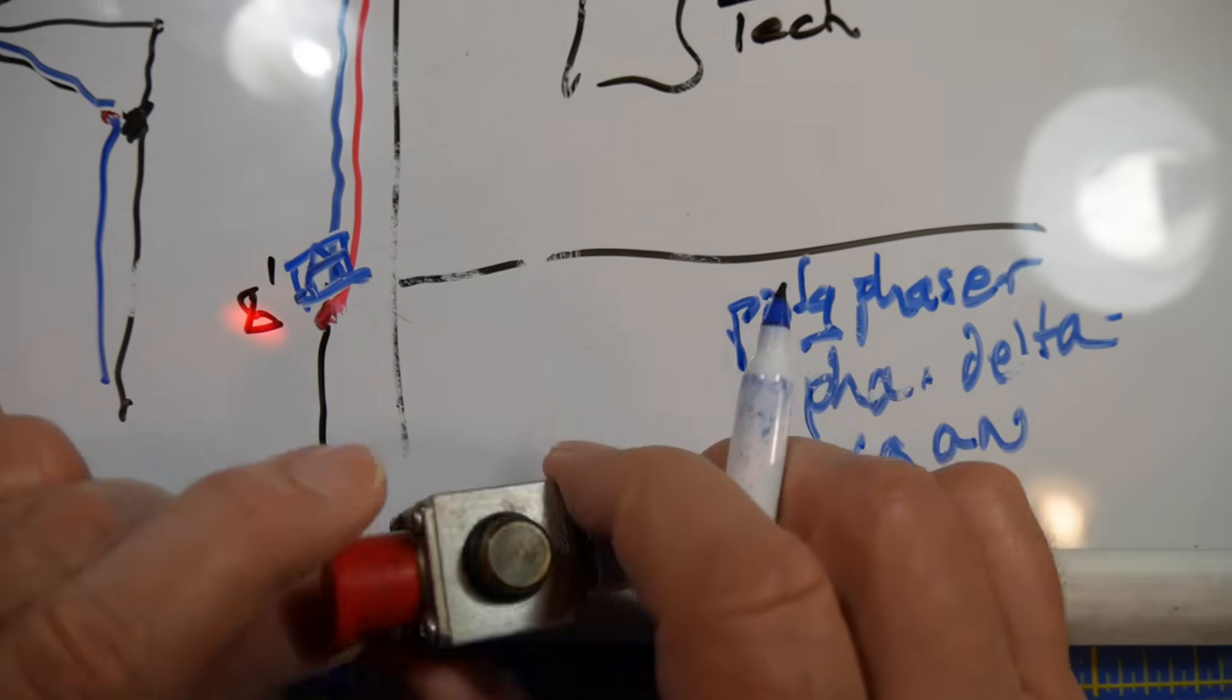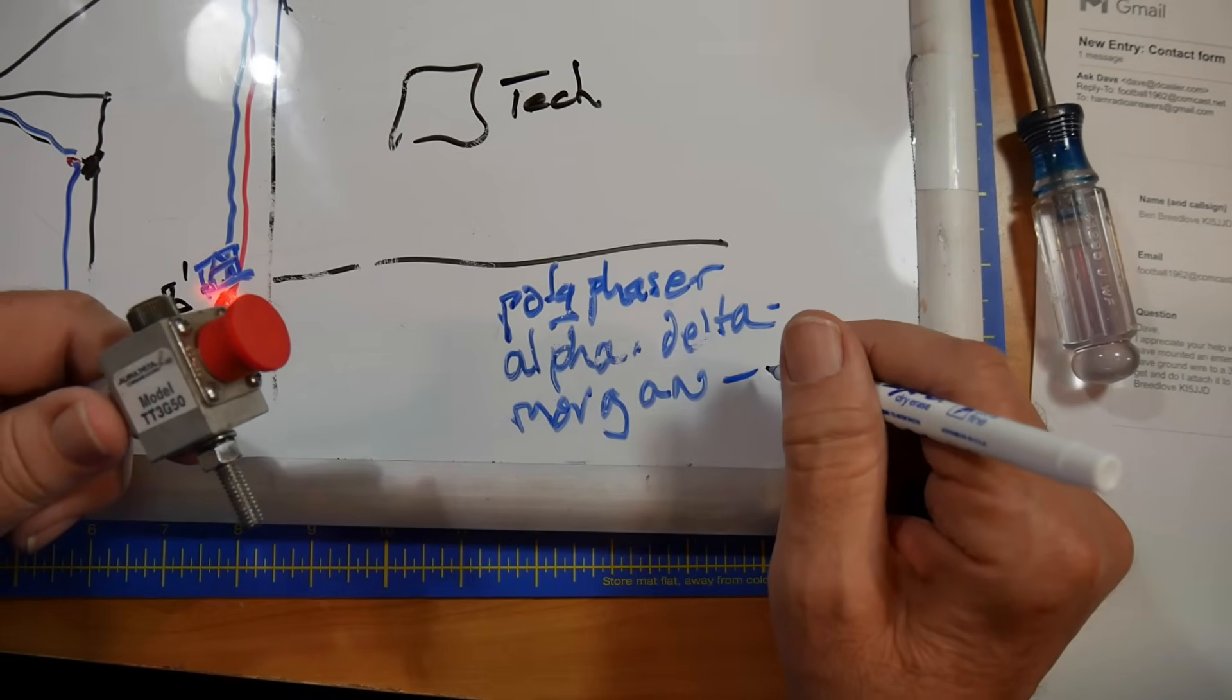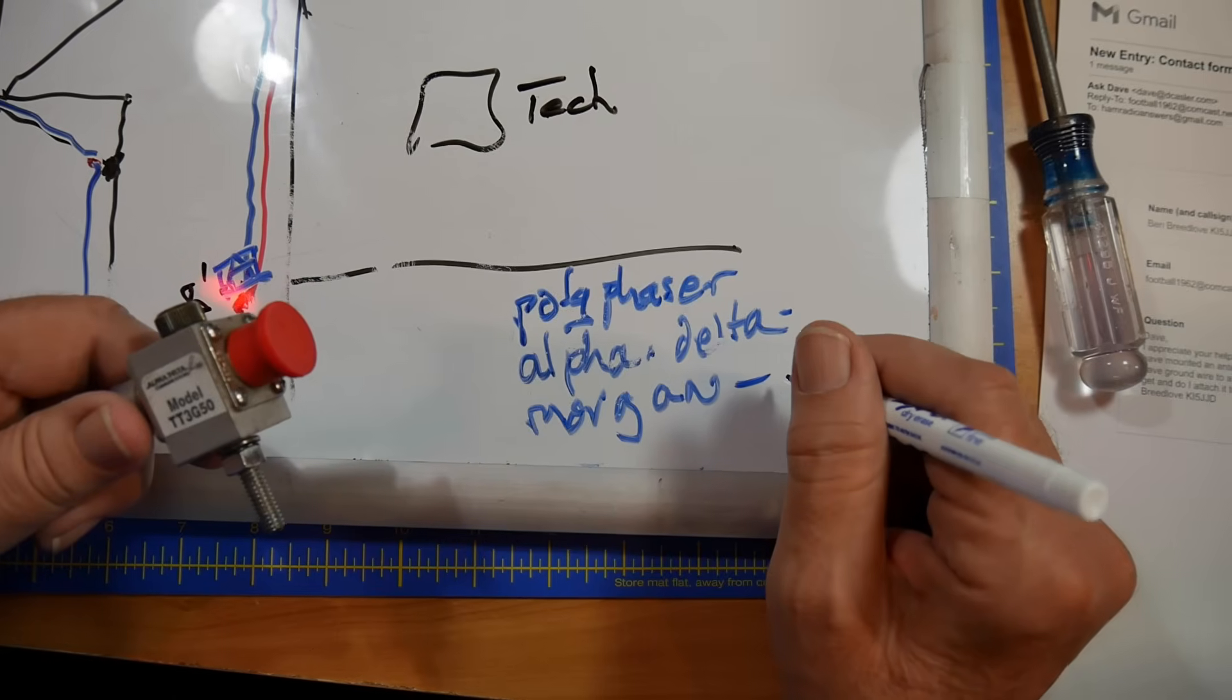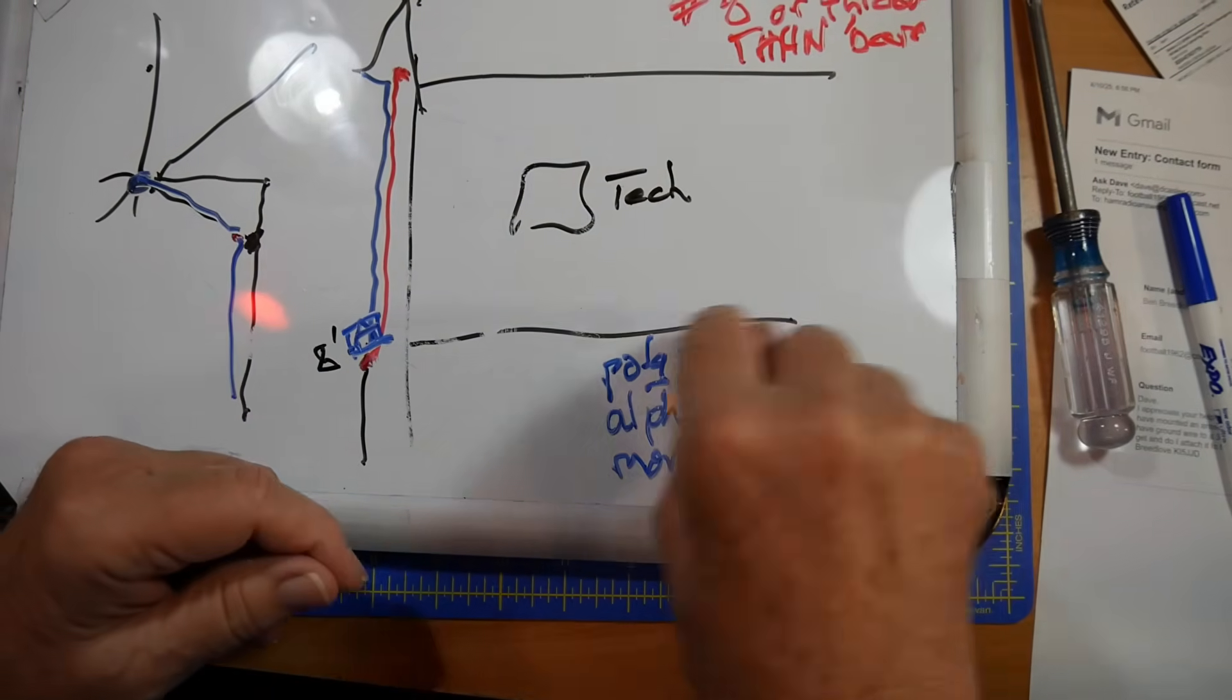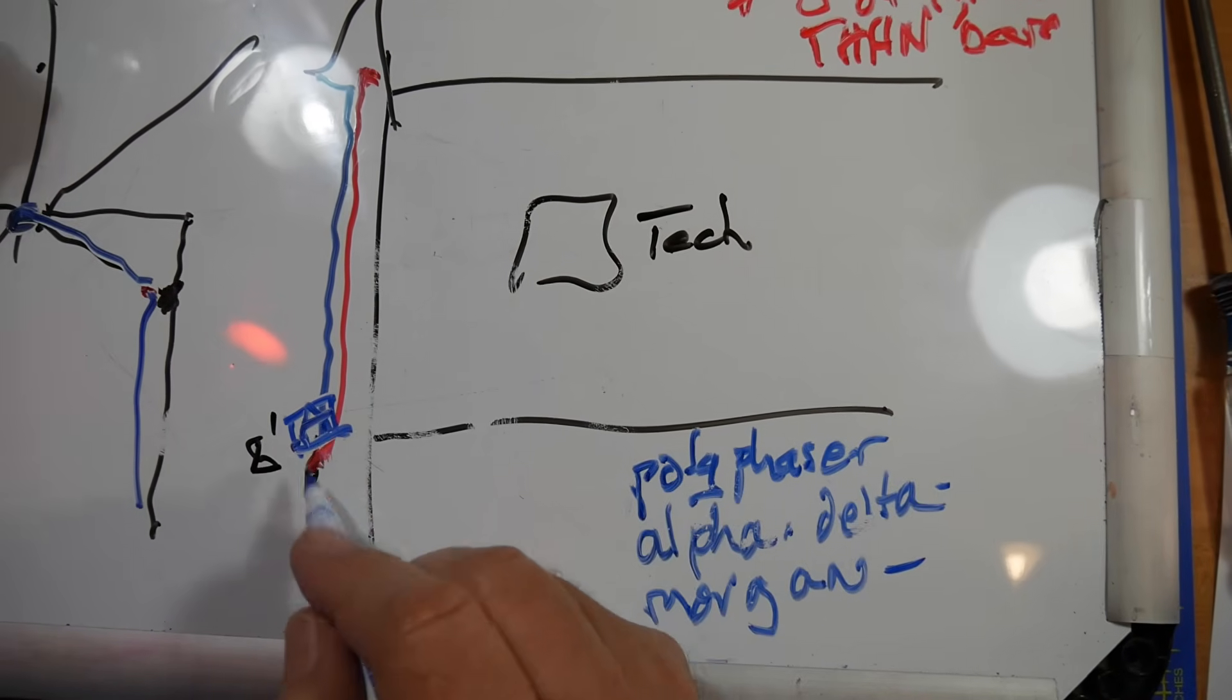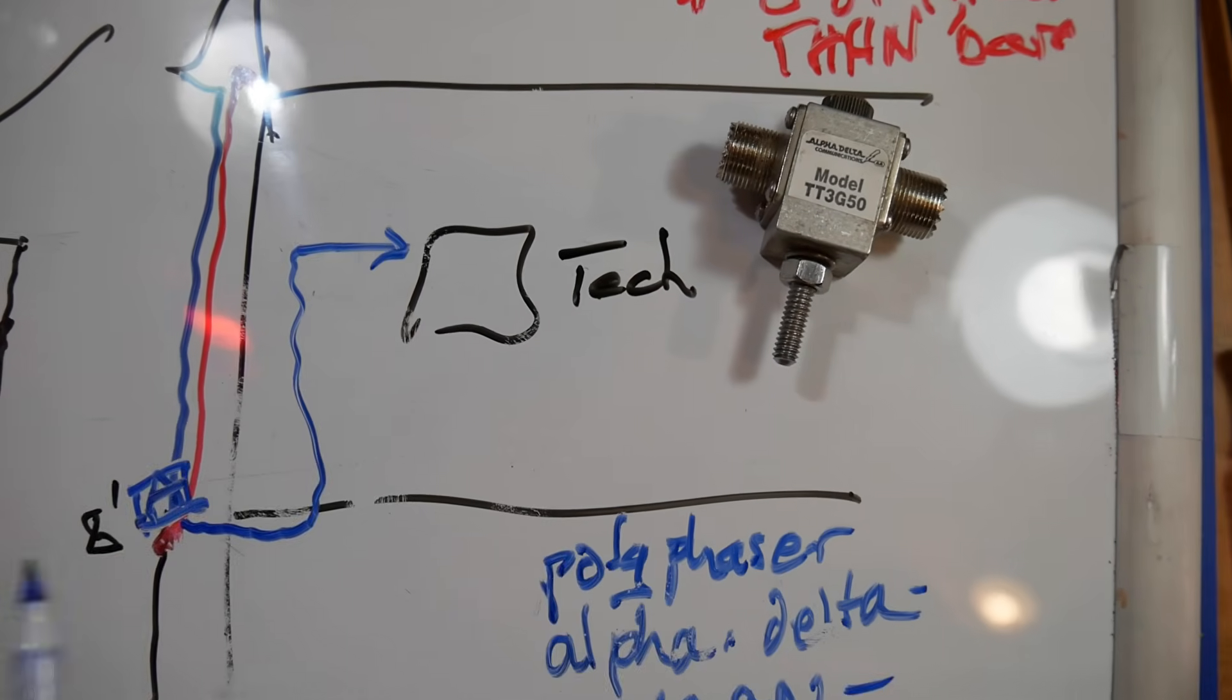This is the alpha-delta model TTG 3G50, alpha-delta communications. Know that there's nothing on here that says that it's UL listed. UL listed would be a good idea, and I'm looking into these. The Morgan is not listed, although it has been listed in the past. The design has not changed, but they've stopped the listing because the certification every year is expensive. But polyphasor, I'm still checking on the listing on that. Okay, I'm going to make a major change to saying go with listed. So, you've got the eight-foot ground rod, the cable connects there, the cable connects there, and then that goes into the house up to your radio.